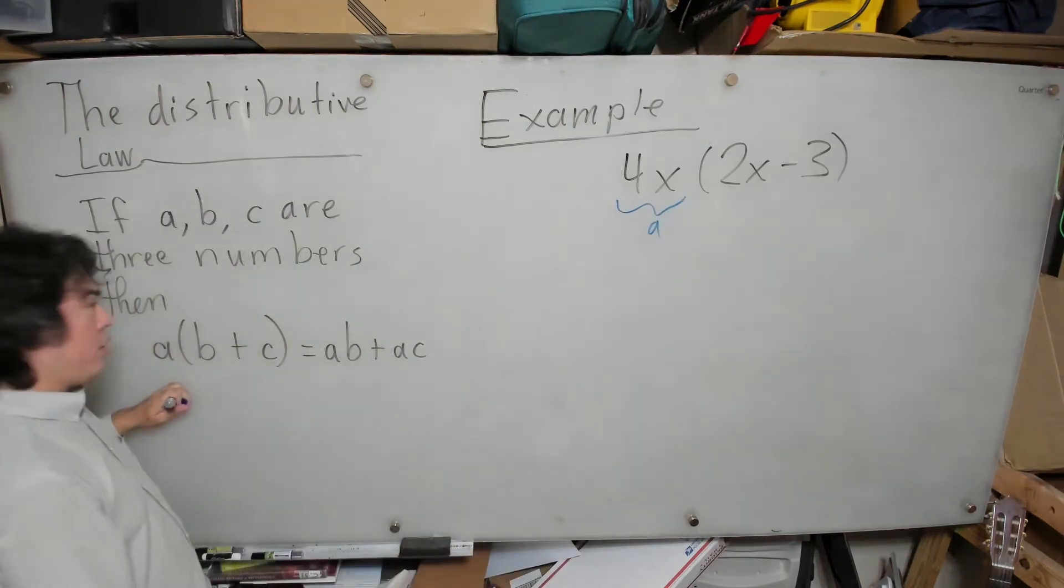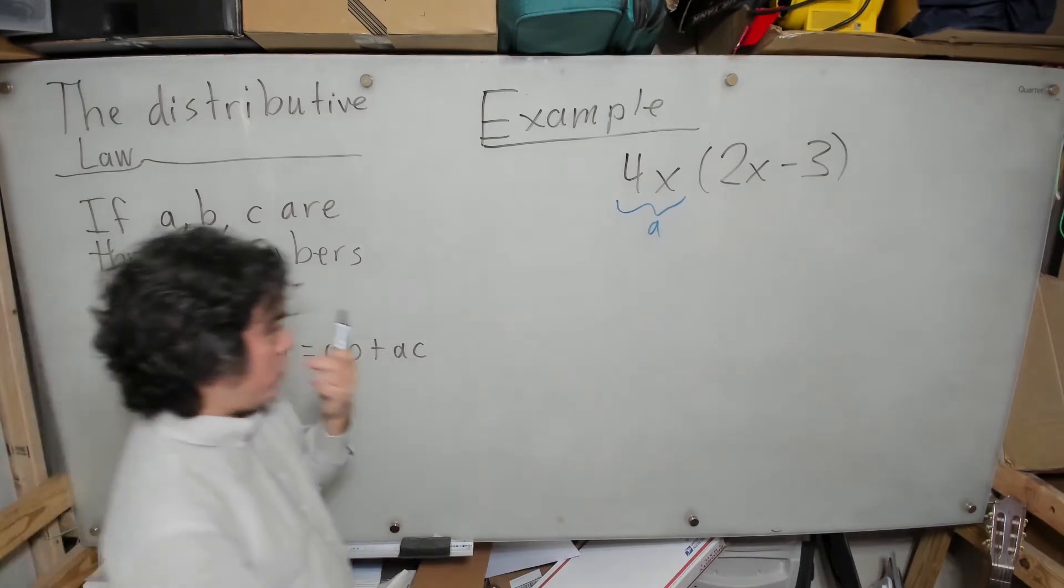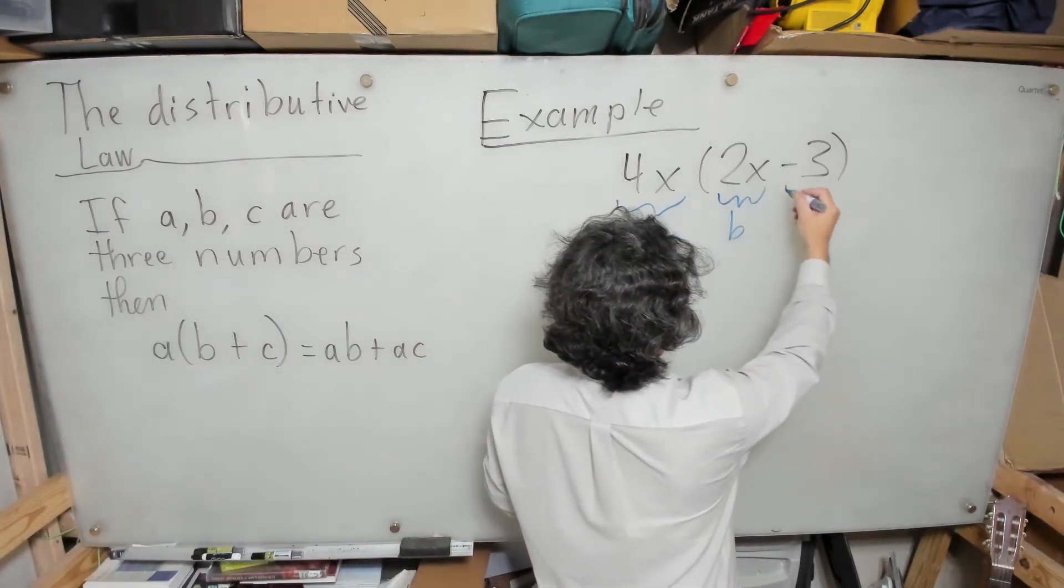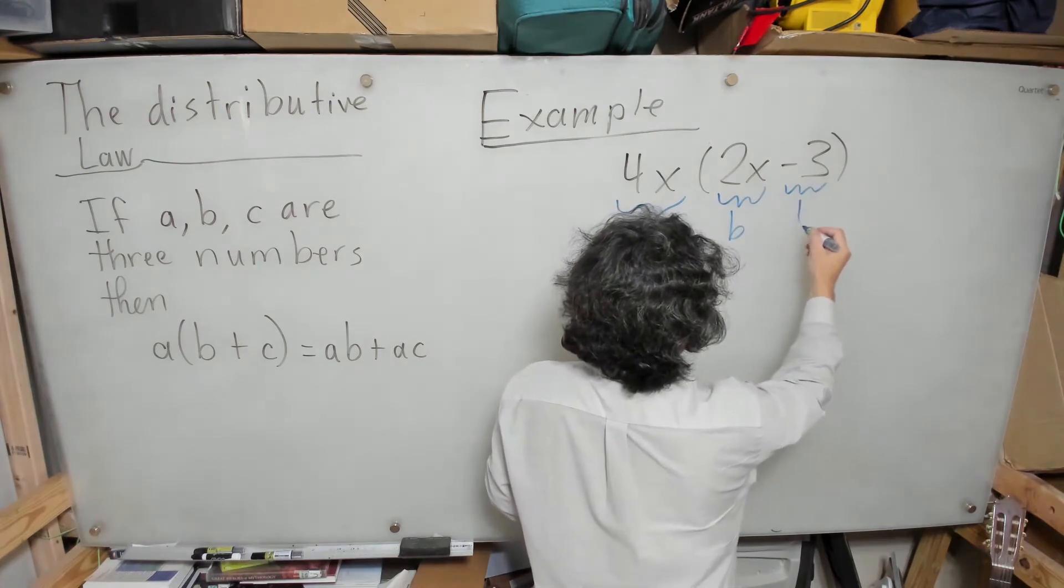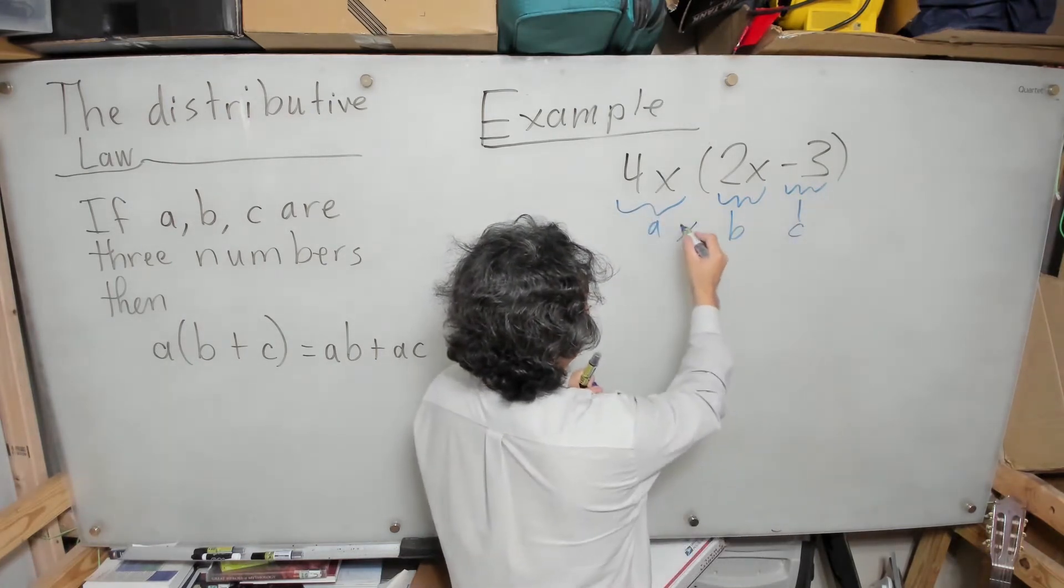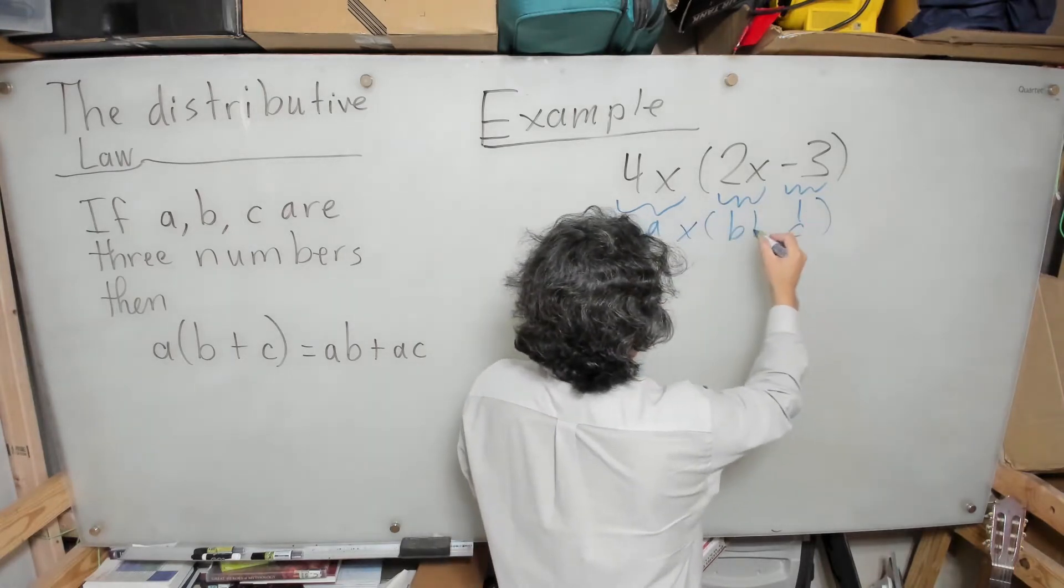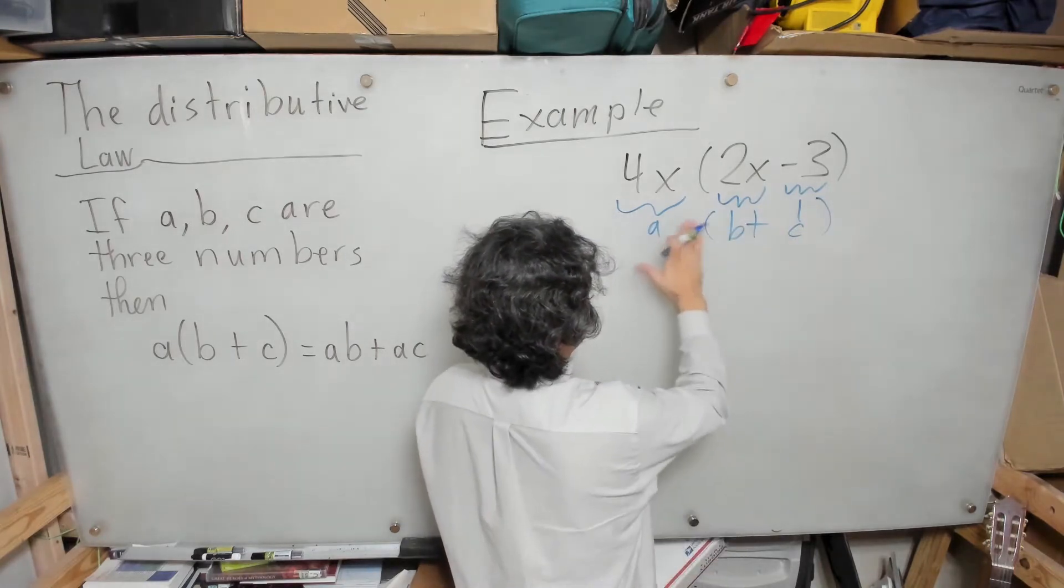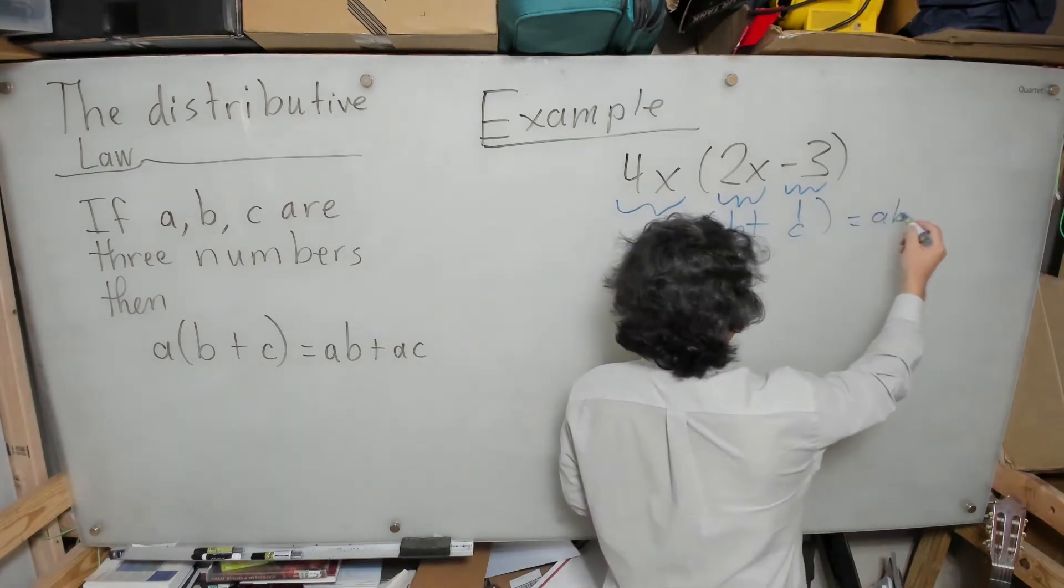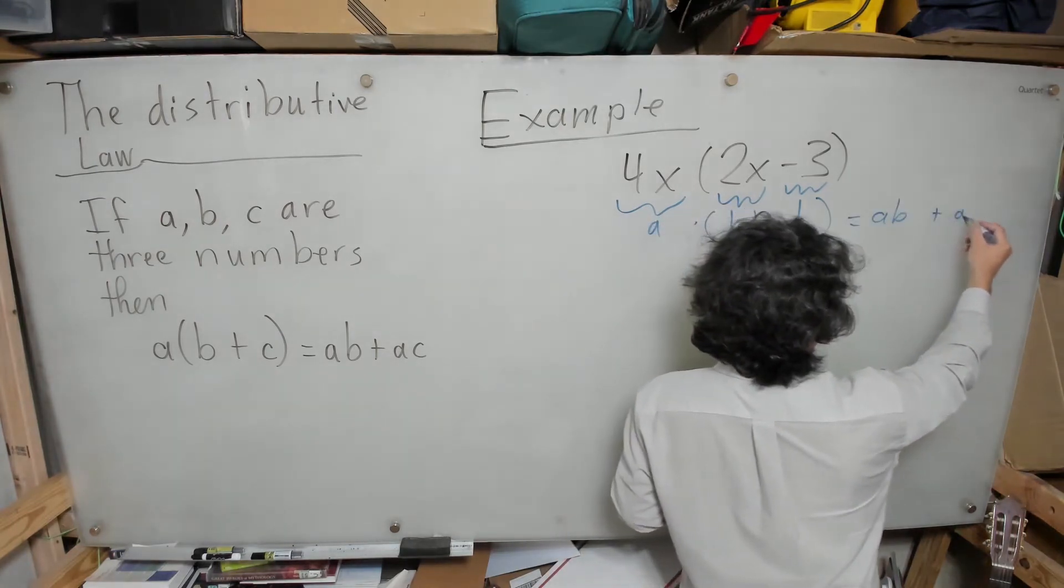Here we have: this will correspond to our a, the 2x will correspond to our b, and the negative 3 will correspond to our c. We know that a times (b + c) equals ab plus ac.